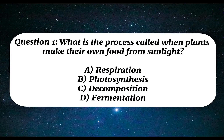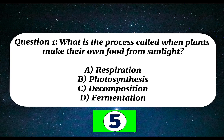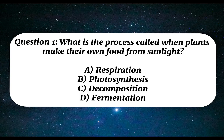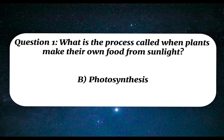Question 1. What is the process called when plants make their own food from sunlight? A. Respiration. B. Photosynthesis. C. Decomposition. D. Fermentation. Correct answer: B. Photosynthesis.